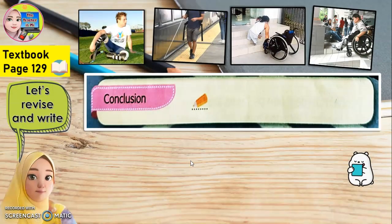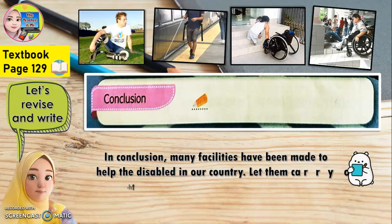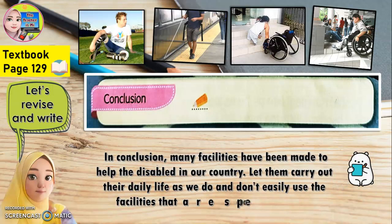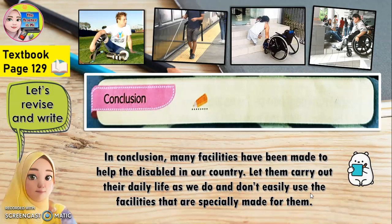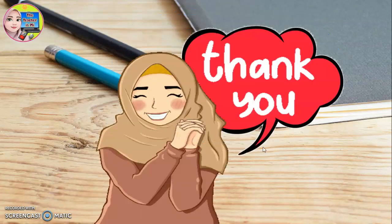Let's go to the conclusion. You can write like this: 'In conclusion, many facilities have been made to help the disabled in our country. Let them carry out their daily life as we do and don't easily use the facilities that are specially made for them.' Sebagai kesimpulannya, banyak kemudahan telah disediakan untuk membantu orang kurang upaya di negara kita. Biarkan mereka menjalankan kehidupan seharian mereka seperti kita, dan jangan sewenang-wenangnya menggunakan kemudahan yang disediakan khas kepada mereka. It's time for you to complete the exercise in the link given. Thank you.